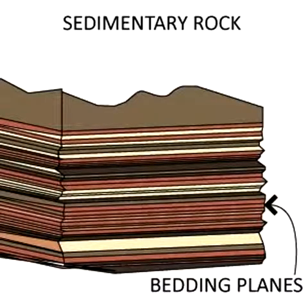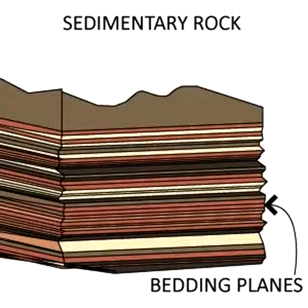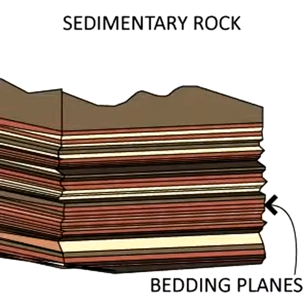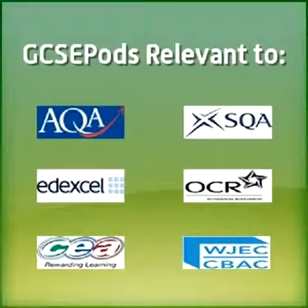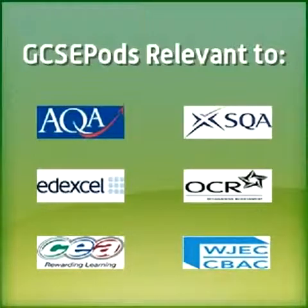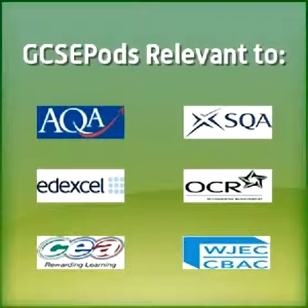Sedimentary rocks, because of the way they are formed, have distinct layers known as beds, with lines of weakness or bedding planes between them. The type of rock formed depends on the type of particles that are deposited and compressed.